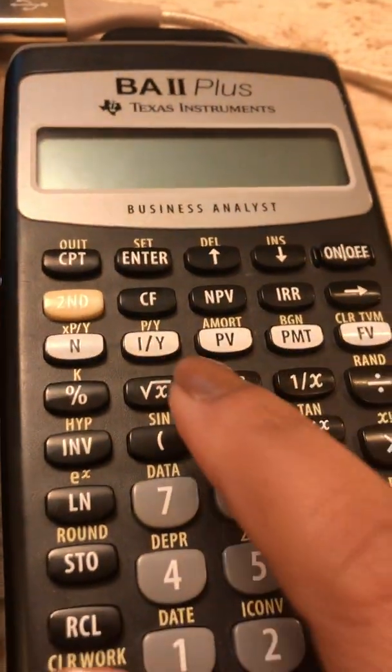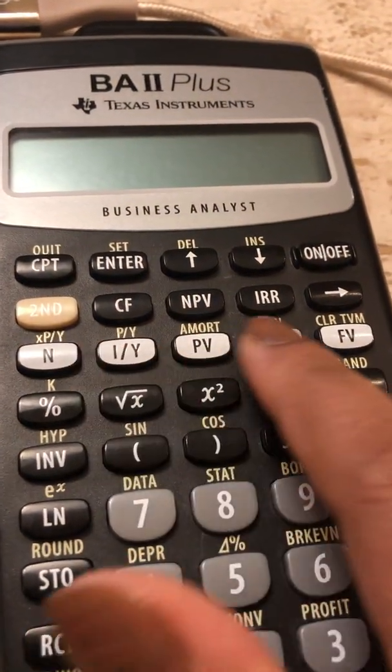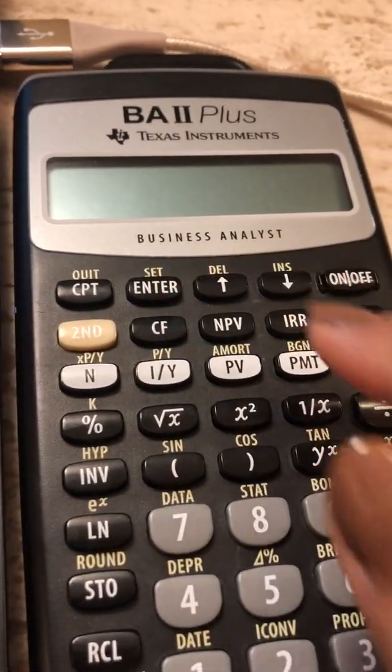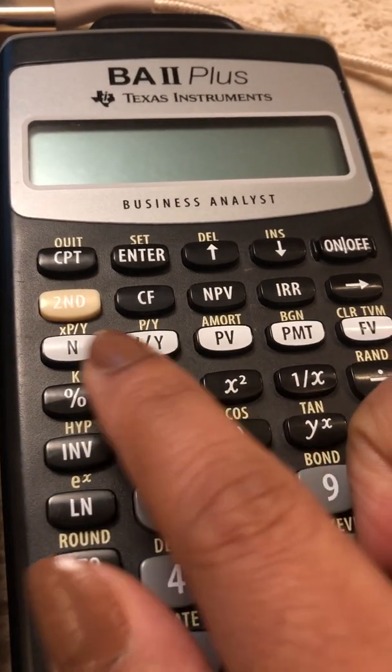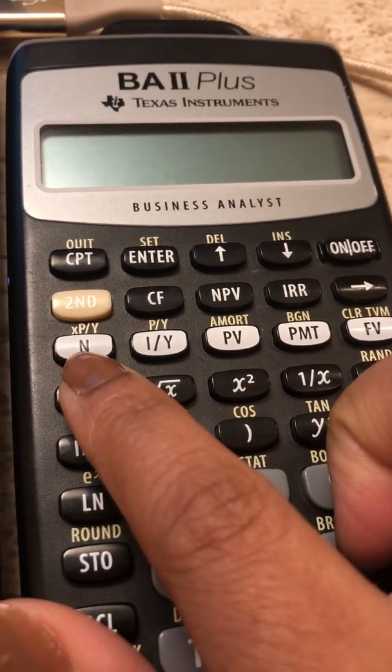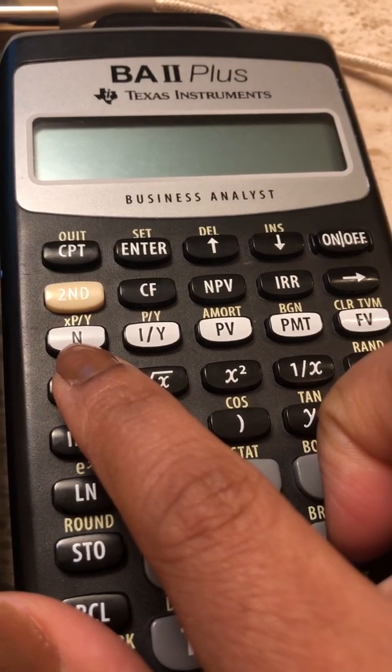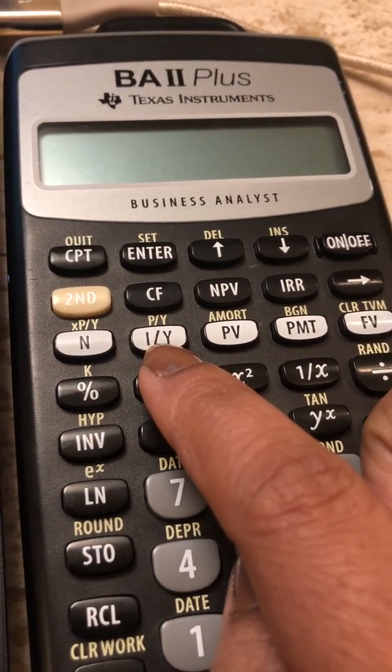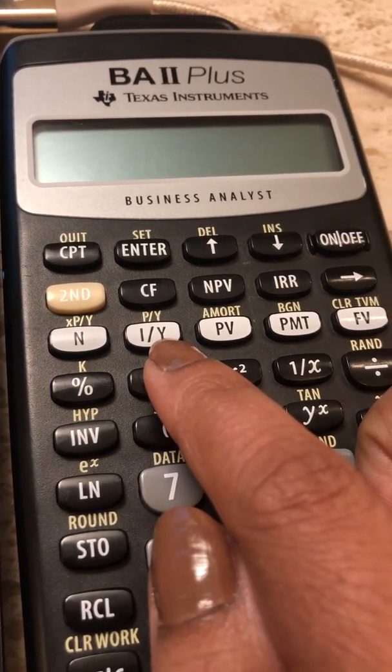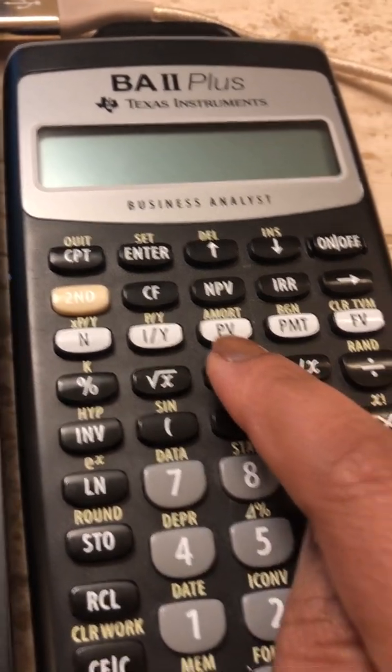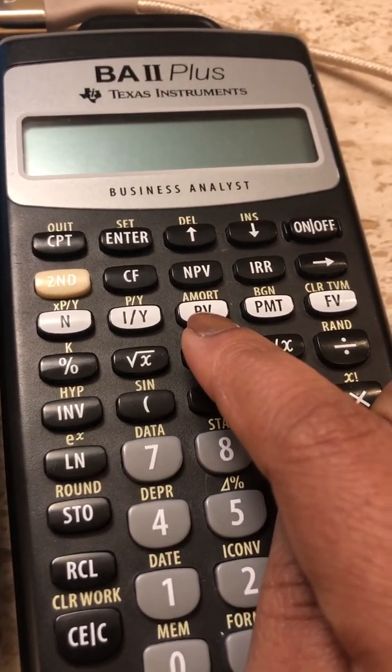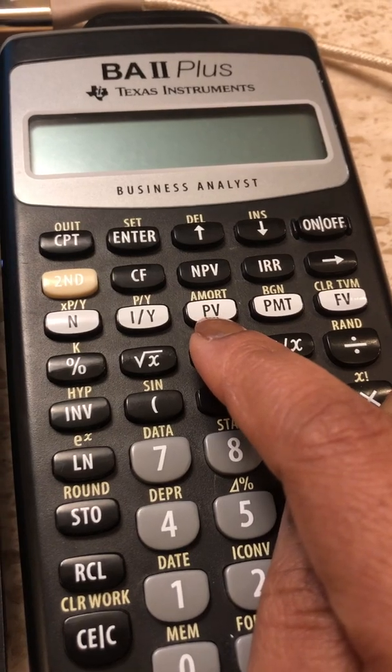So in this case, while using the BA2 Plus, we're going to use the white set of keys, which is the third row from the top: N, which is the number of time periods, in this case 20 years; the I by Y, which is the annual interest rate of 4%; the PV or the present value, which is the initial loan amount of $300,000.